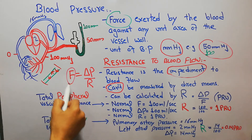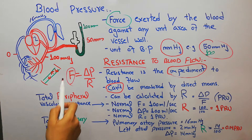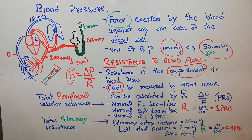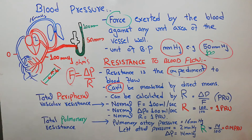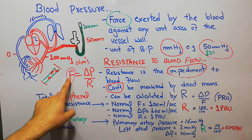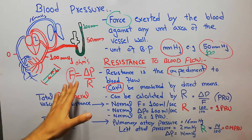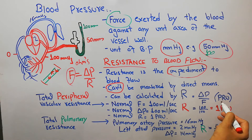Blood flow can be measured by electromagnetic flow meter or ultrasonic Doppler flow meter, and calculated by Ohm's law. Blood pressure can be measured with a manometer. But resistance cannot be calculated directly — it is calculated using the modified Ohm's law: resistance equals pressure divided by flow. The unit of resistance is PRU — peripheral resistance unit.